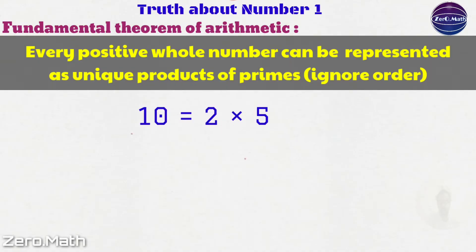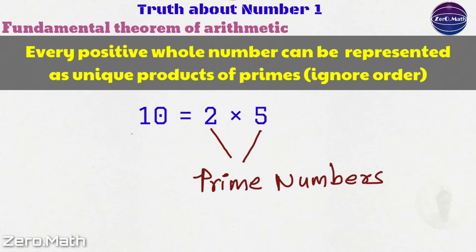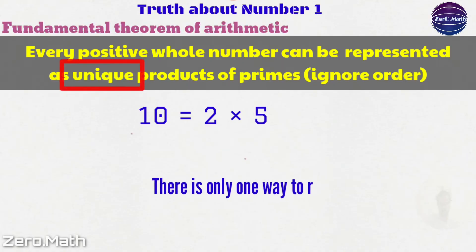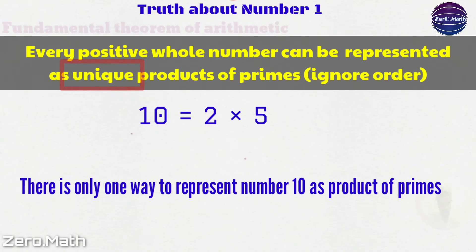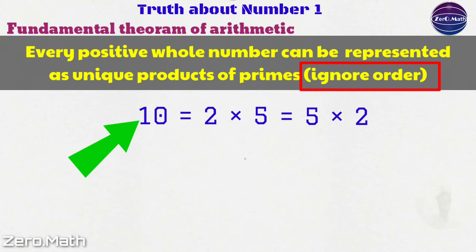For example, I can make number 10 as a product of 2 and 5, where 2 and 5 are both prime numbers. Now if you look at the definition of fundamental theorem of arithmetic carefully, there is an important word: unique. What it means is there is only one way to represent number 10 as a product of primes. Number 10 can be represented as 2 into 5 or 5 into 2, which is the same thing. We do not have a problem with this representation.